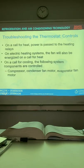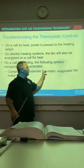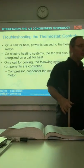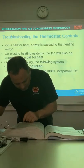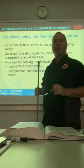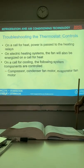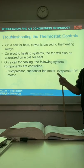So, let's talk about troubleshooting that thermostat a little bit. On a call for heat, power is passed to the heating relays. On electric heating systems, the fan will also be energized by a call for heat. On a call for cooling, the following system components are now controlled. The compressor, the outdoor fan motor, and the indoor fan motor. All of that is controlled with the cooling circuit. Any questions about that?